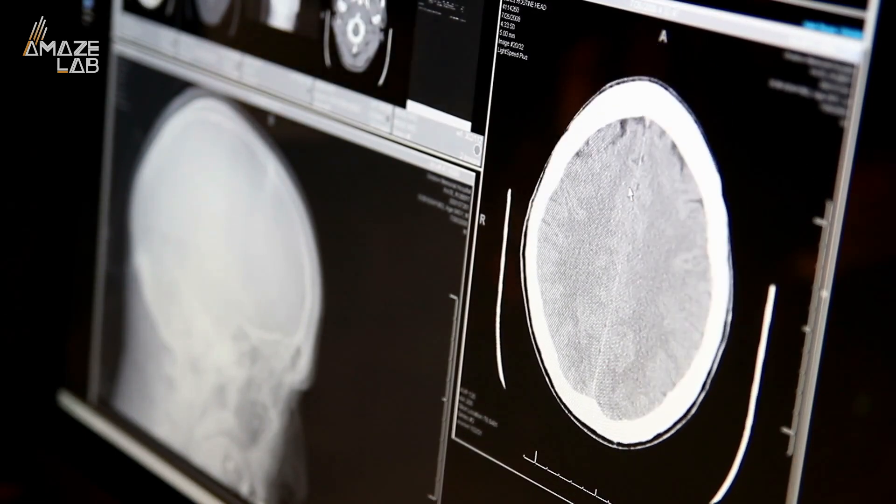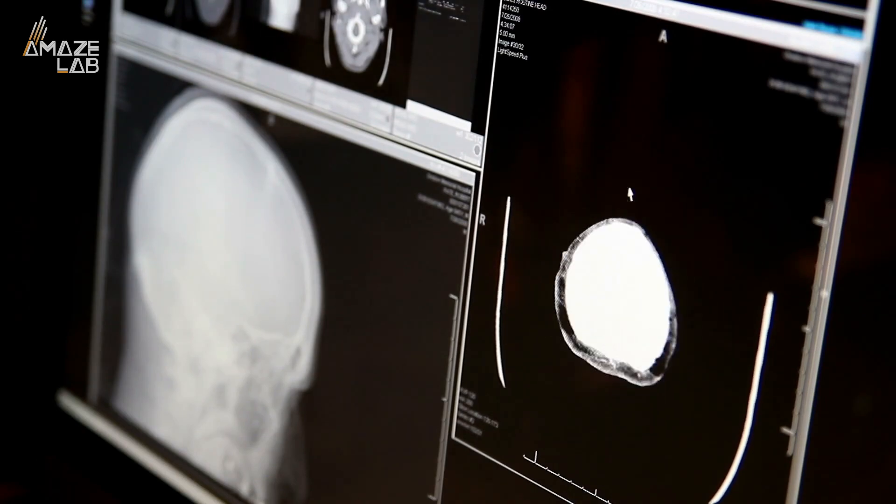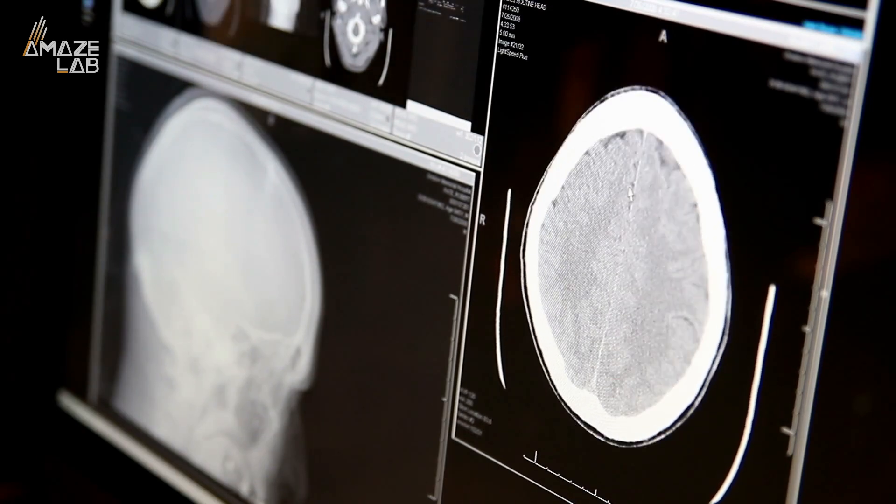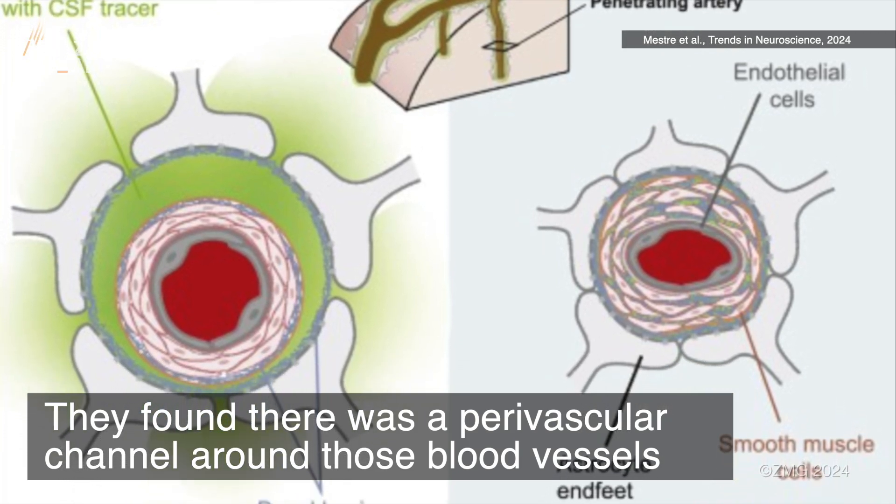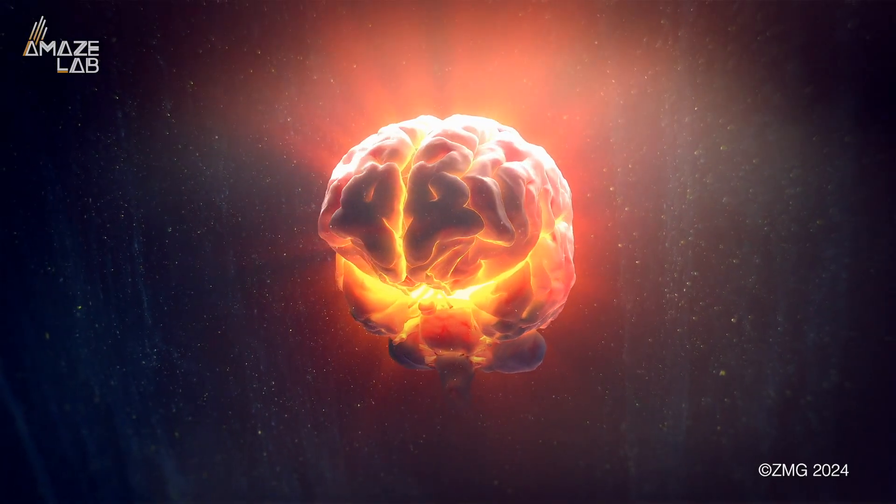They found that CSF wouldn't be directly absorbed by the brain; rather, it would follow the blood vessels deeper into the tissue. In fact, they found there was a paravascular channel around those blood vessels—one the CSF could permeate and travel through to reach deeper neurological tissue.